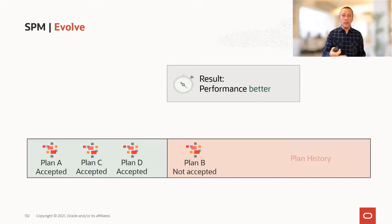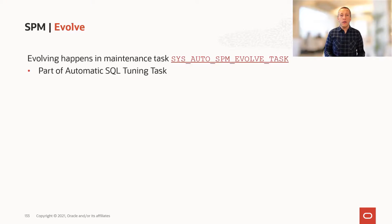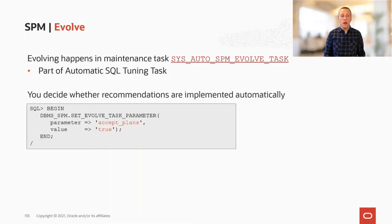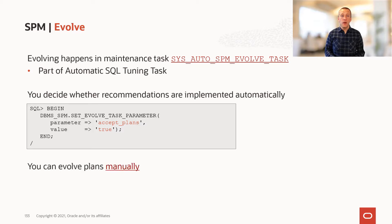So the next time you execute an SQL, this plan can be used by the optimizer. Evolving takes place in your maintenance window and it's part of the automatic SQL tuning task. By default, plans that have been verified by the evolve task to perform better will be automatically accepted, but you can change the behavior if you want. It's also possible to manually perform the evolution.